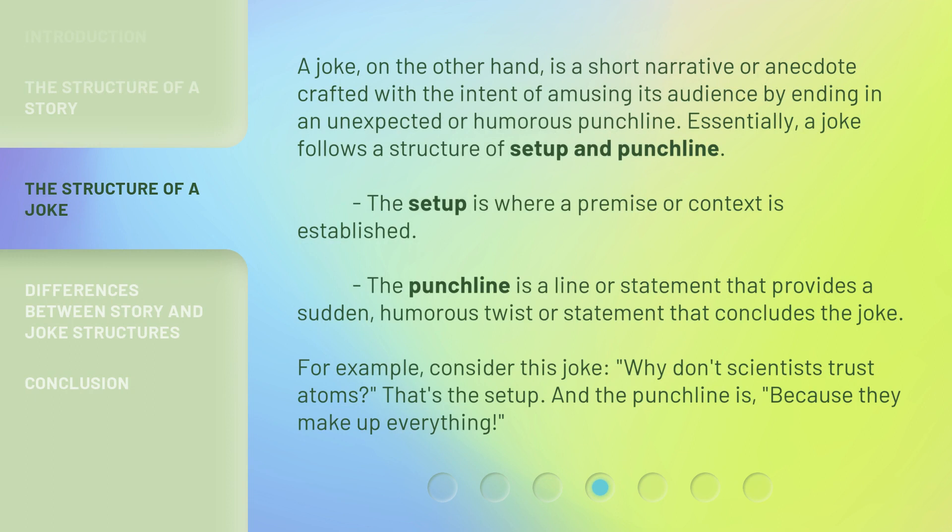A joke, on the other hand, is a short narrative or anecdote crafted with the intent of amusing its audience by ending in an unexpected or humorous punchline. Essentially, a joke follows a structure of setup and punchline. The setup is where a premise or context is established. The punchline is a line or statement that provides a sudden, humorous twist or statement that concludes the joke.